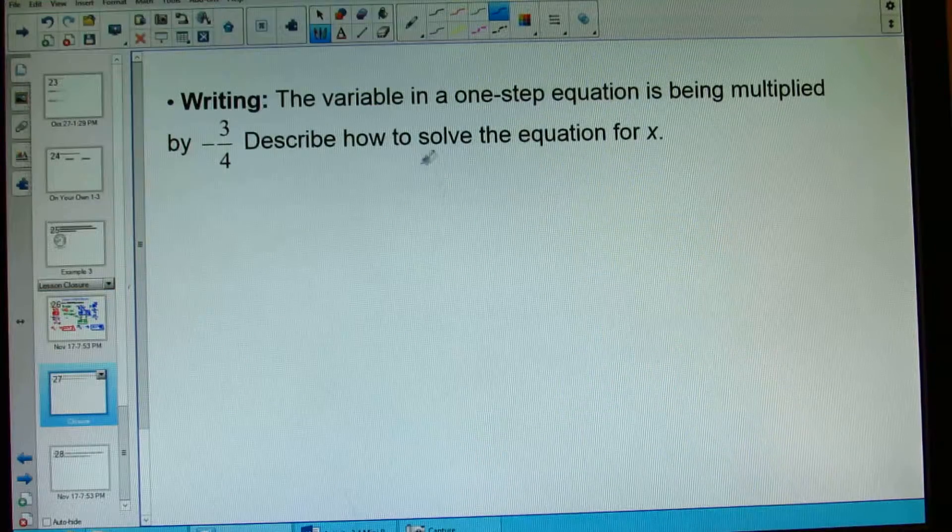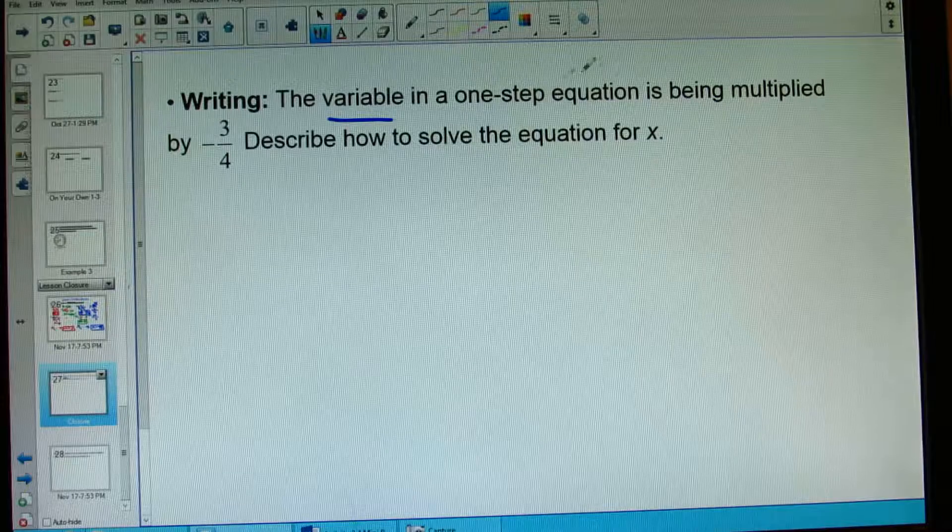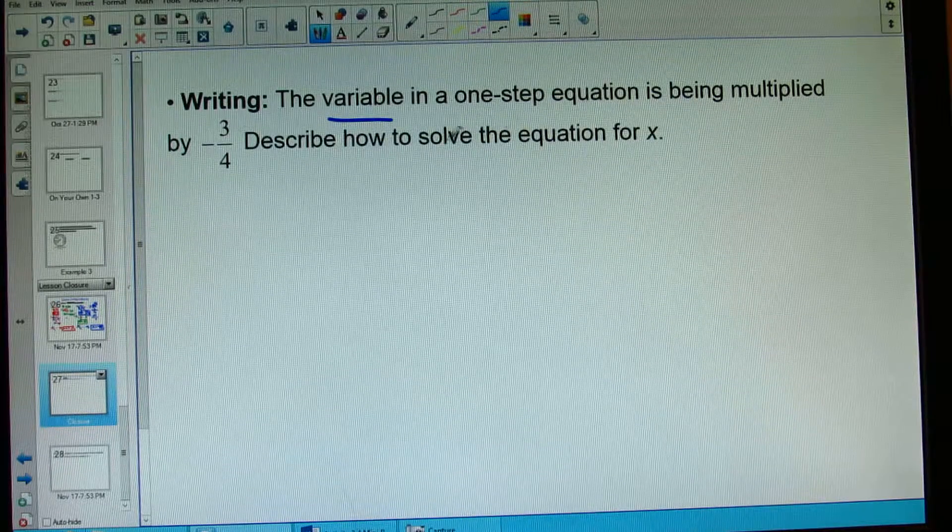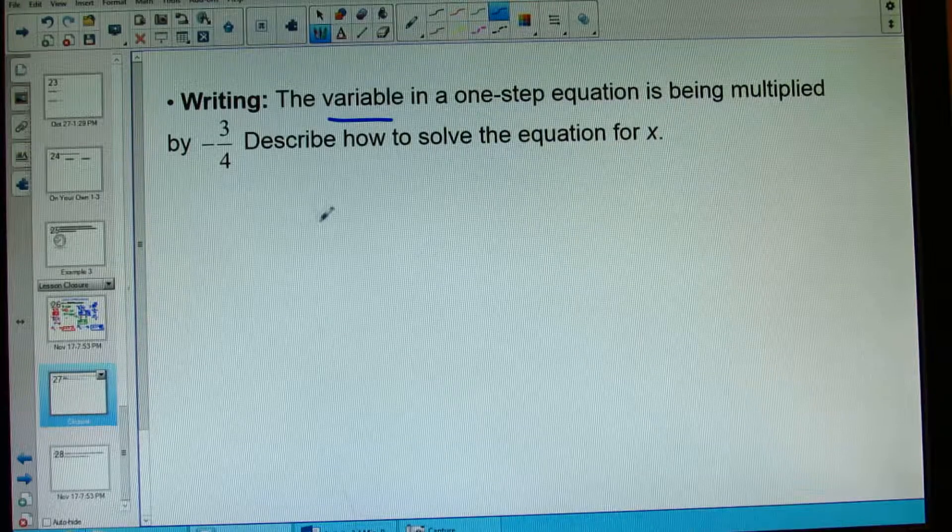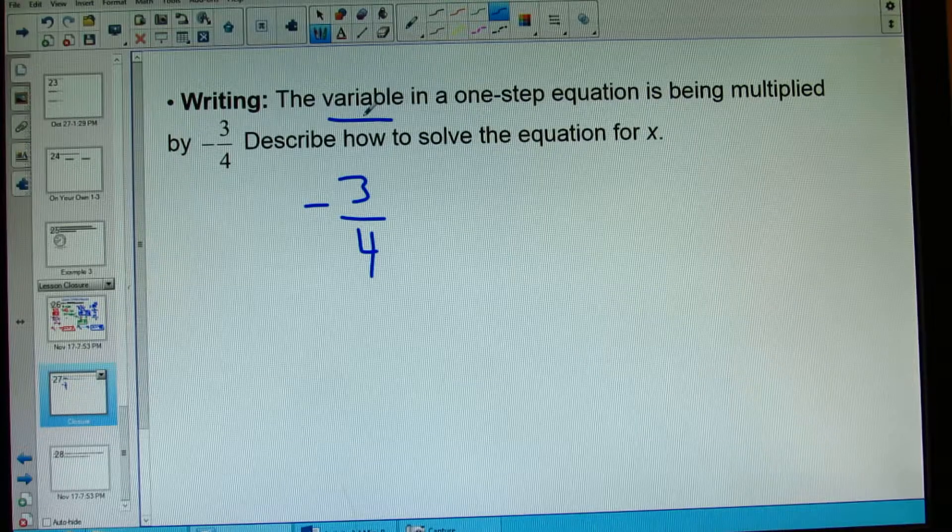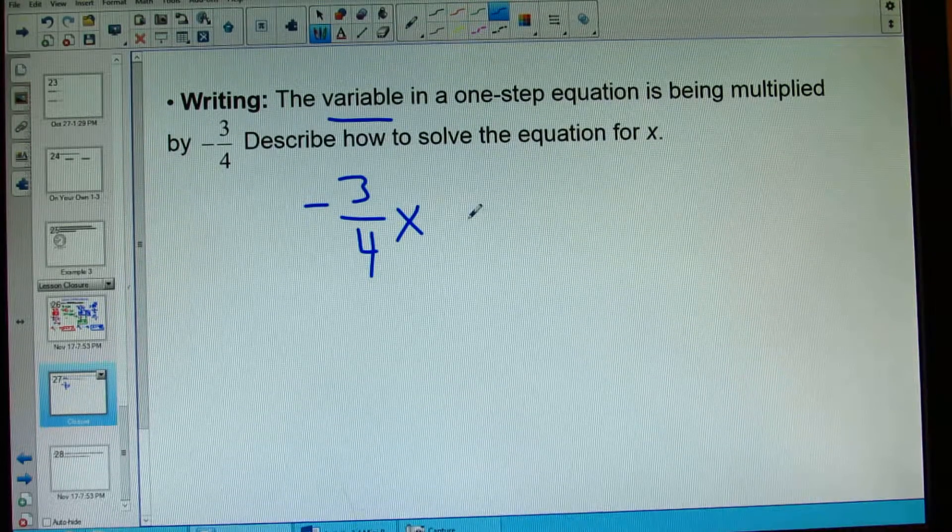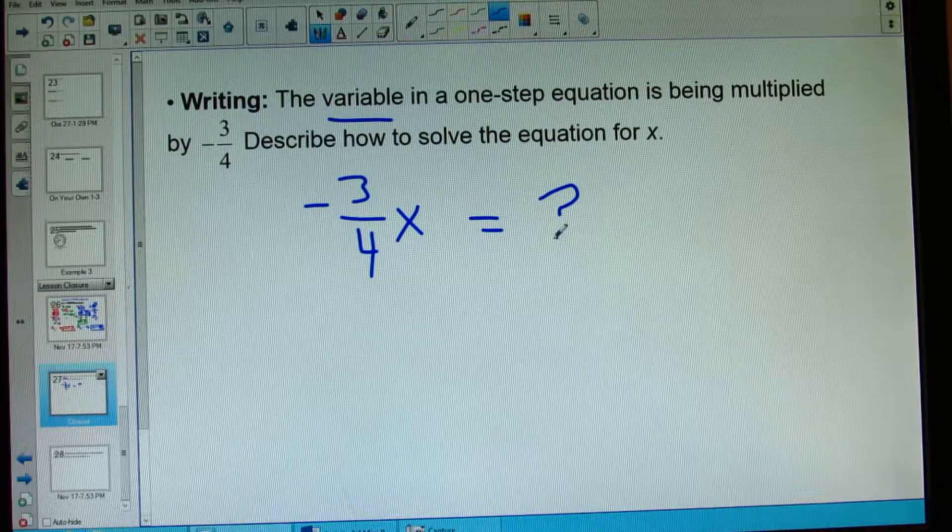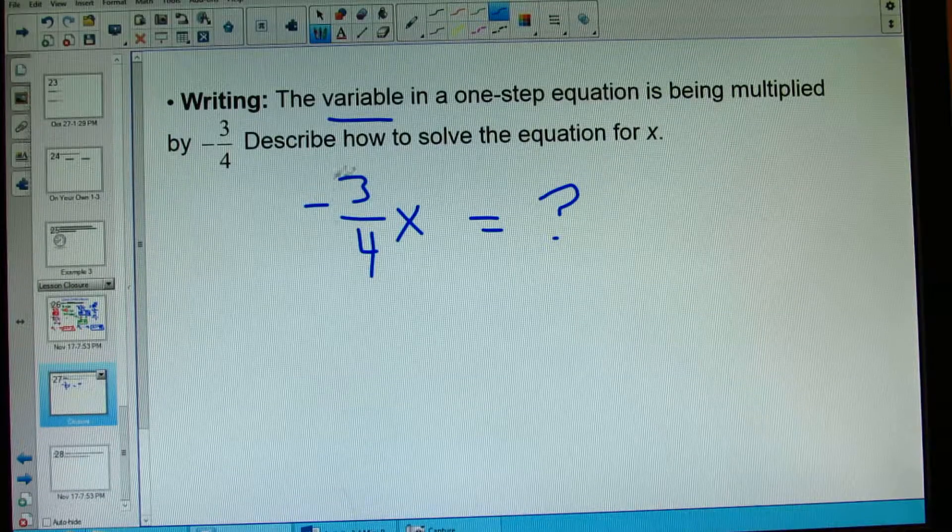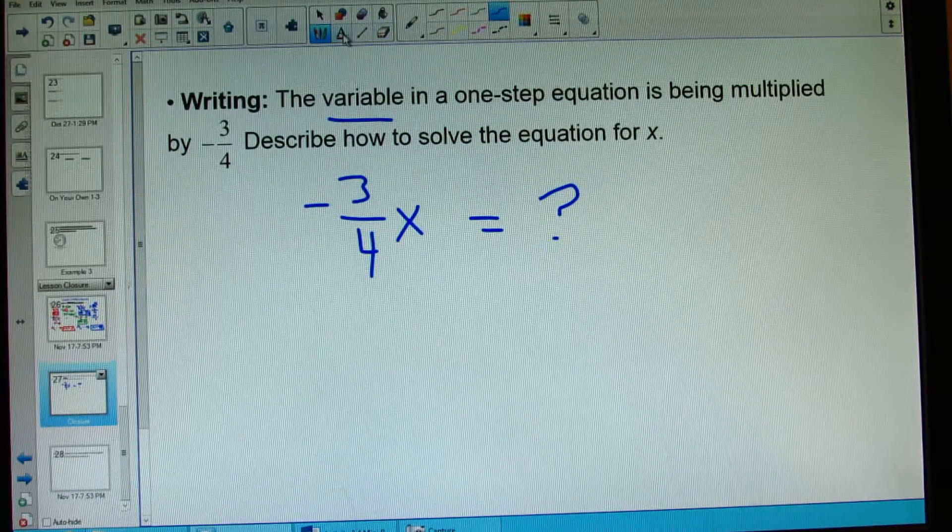Moving on to my writing. The variable letter in a one-step equation is being multiplied by negative 3 fourths. Describe how to solve the equation for x. What they're saying is, if this number and my variable are multiplying each other, that means they're right next to each other. And it equals something. It doesn't really matter what the something is. They want you to describe how do you solve for x. How do you get rid of this negative 3 fourths? And you can do it a few different ways.